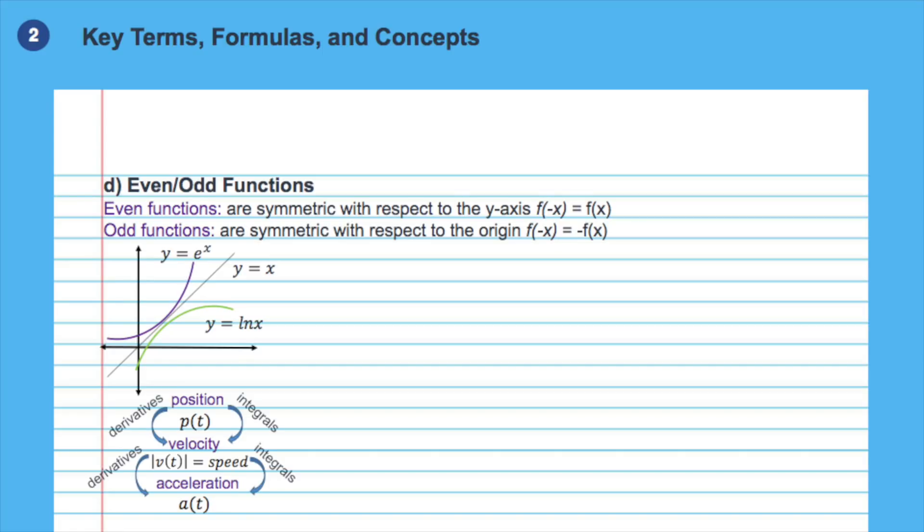In velocity acceleration and position problems, remember which concept comes from derivating or integrating the given function. Transitions between p of x, v of x and a of x are pretty common in the exam. Also remember that speed function is the absolute value of the velocity function, meaning that in speed we only care about the magnitude and in velocity we also have direction of motion shown by a plus or minus sign.